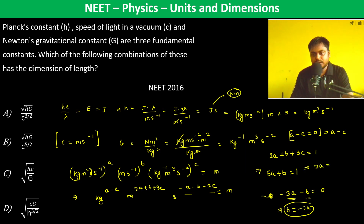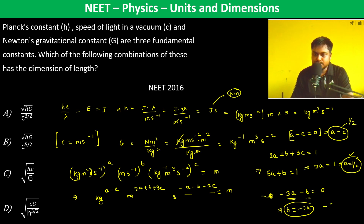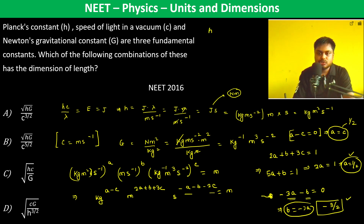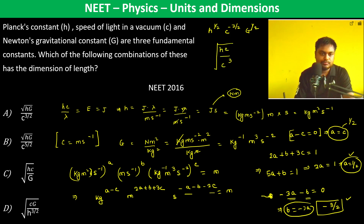Substituting b equals minus 3a into 5a plus b equals 1 gives 2a equals 1, so a equals one half. Since a equals c, c is also one half. And b is minus 3 over 2. Therefore the combination is h^(1/2) · c^(−3/2) · G^(1/2), which equals the square root of hG divided by c³. That is option A.